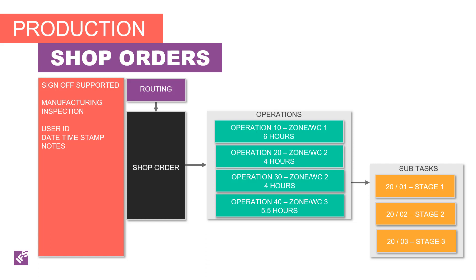The production shop orders — we do support sign-off type functionality with those, we do some manufacturing inspection, and if you get into the quality management areas, we've got other recordings on quality management. We do the user ID, date and timestamp, and notes and such. Making sure that routing information is set up properly, making sure your lead times and work center information is set up properly is very key. So that when it starts to schedule various operations throughout the system, you're getting proper number of hours and when you're looking at actual hours versus your capacity — what your planned hours are — you want to make sure you've got the best data in the system.